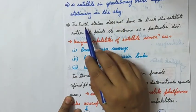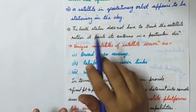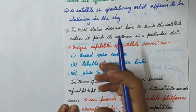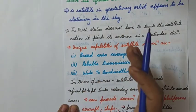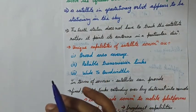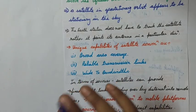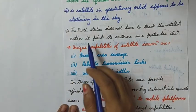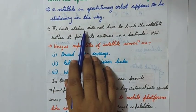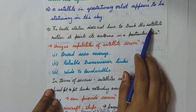Earth stations are needed because users placed very far away can communicate with each other through them. There has to be a station that communicates with the satellite — sends to it and receives from it — and these are called earth stations. Users send a message to the earth station, and the earth station is the intermediate between the users and the satellite.